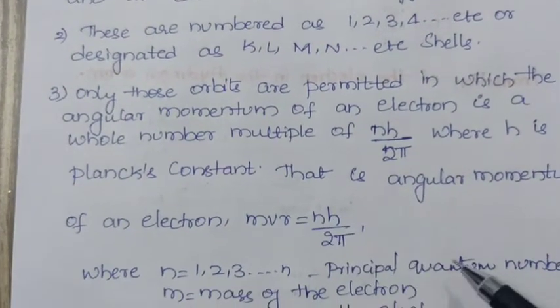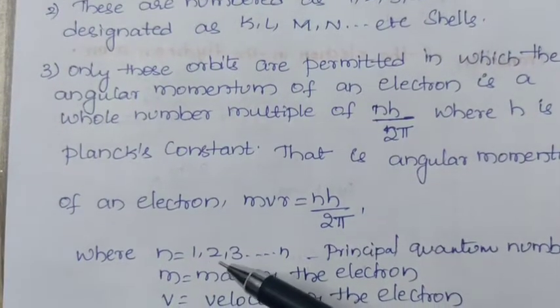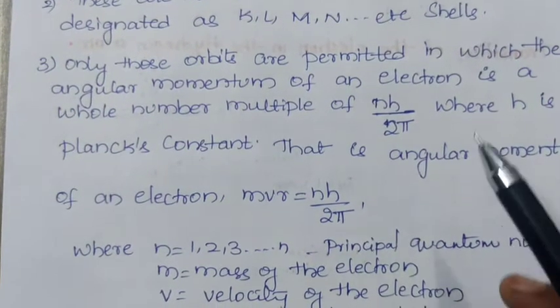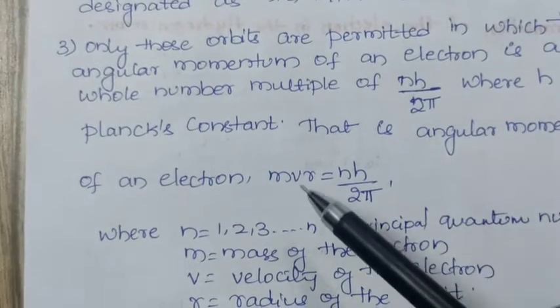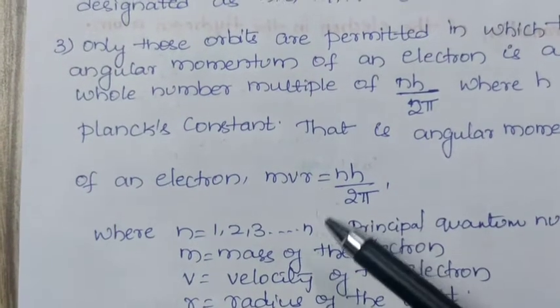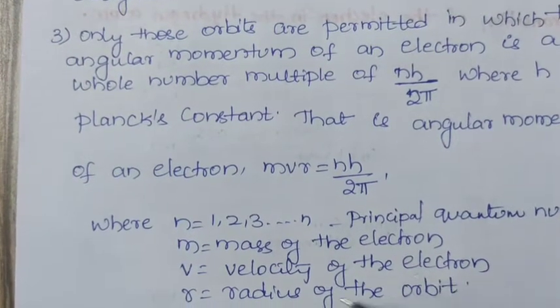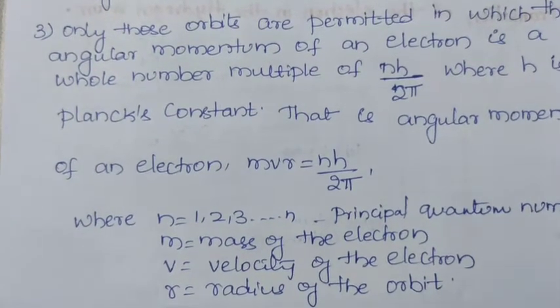Here, N is the principal quantum number with values 1, 2, 3 and so on to infinity. M is the mass of the electron, V is the velocity of the electron, and R is the radius of the orbit.